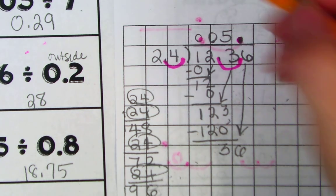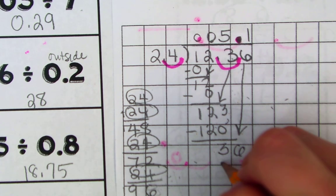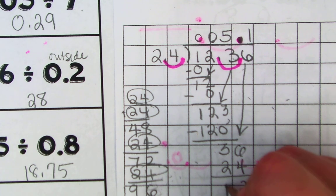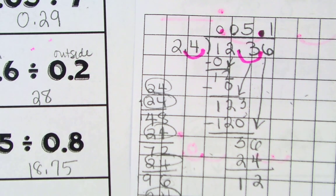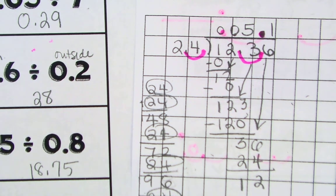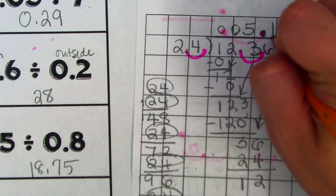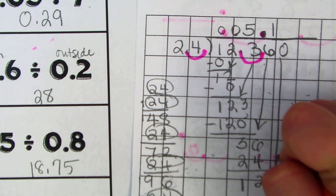Now 24 can go into 36 one time. I get you 24. Subtract. You get 12. I have a remainder of 12. I'm going to add an extra 0 here to see if I can get an even number. I'm going to bring down your 0.